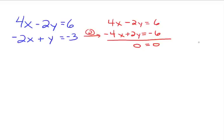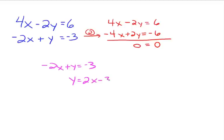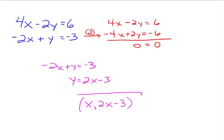What form do those solutions take? Go back to the original two equations and isolate a variable — make it easy on yourself. Take the second equation: negative 2x plus y equals negative 3. Add 2x to both sides and you get y equals 2x minus 3. So we've written y in terms of x. If we know a value for x, we plug it in and automatically know the y value. All the ordered pairs look like (x, 2x minus 3).